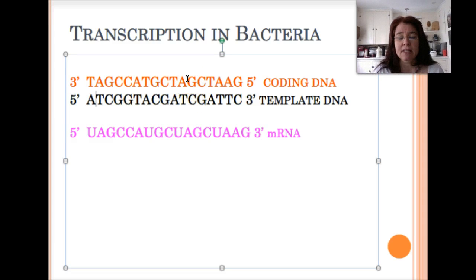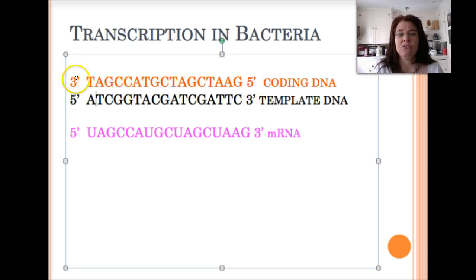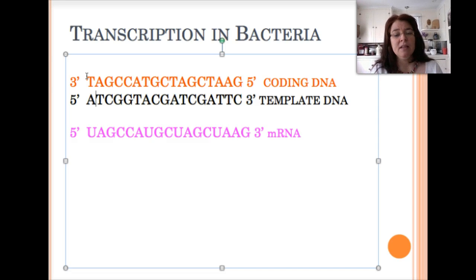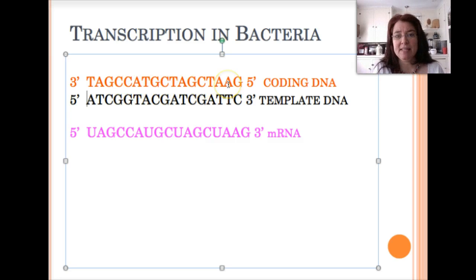The coding DNA — also known as the non-template strand — is complementary to the template DNA and oriented in the opposite direction, with the five prime end at the bottom and the three prime end at the top. Each base in the non-template strand is complementary to the template strand: where there's an A, the complement is T; where there's a T, it's an A; where there's a C, it's a G; and where there's a G, we see a C.